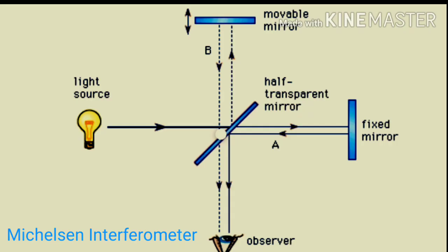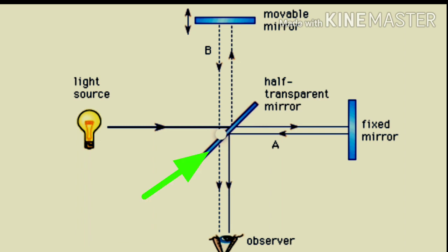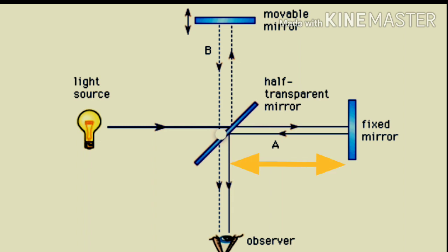This is a Michelson interferometer. Rays from the light source come towards the beam splitter. From the beam splitter, some rays transfer towards the fixed mirror and some are reflected towards the movable mirror. When they come back towards the beam splitter, the rays travel equal path distance from both the fixed mirror and the movable mirror, as shown in the presentation. This equal time and equal distance produces constructive interference.